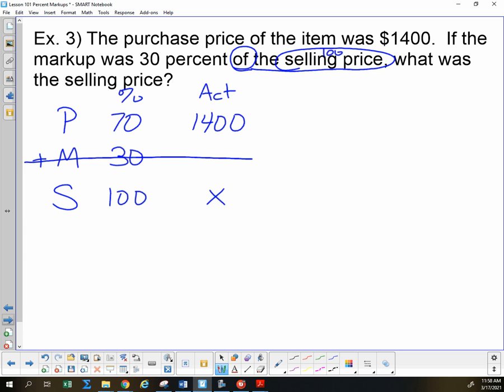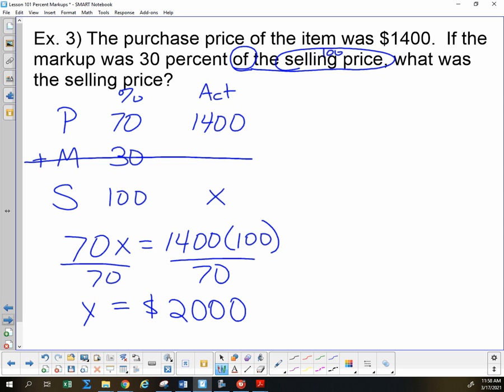Now I no longer need the middle row since it has something that is missing in there. And I have my ratio 70 over 100 is 1,400 over X. One cross product, 70X equals 1,400 times 100. Divide both sides by 70 so we can get just X. And when we do that division, we will end up with $2,000. And again, dollar sign on the left. And this was our selling price.